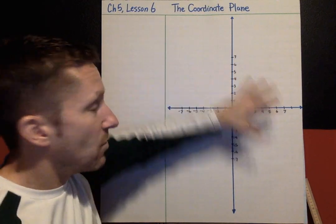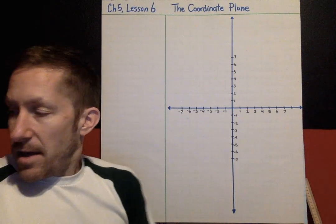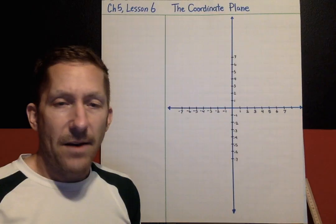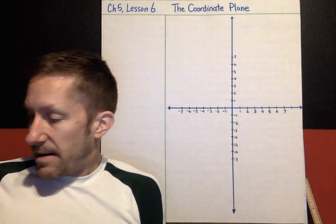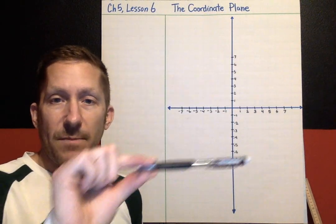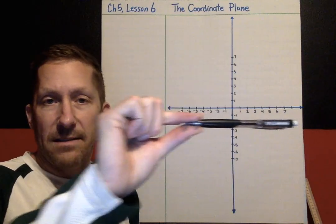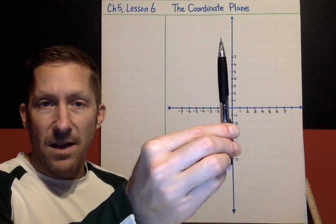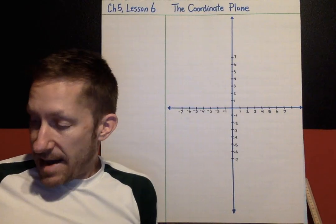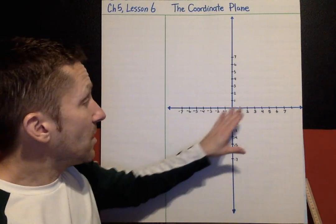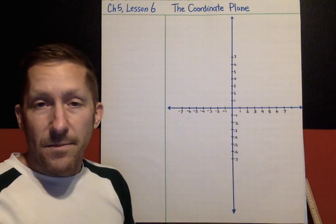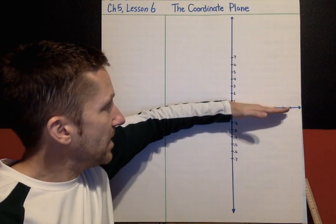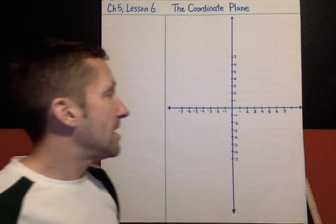This is a coordinate plane. If you look back at Lesson 1, we talked about number lines. We talked about how they can be horizontal — that's this way. We also talked about how number lines can be vertical, up and down. To make a coordinate plane, we overlay a horizontal number line with a vertical number line.